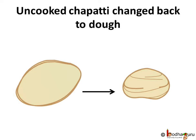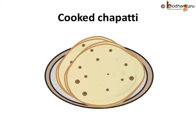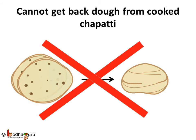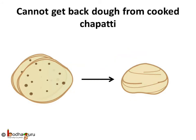If the chapati shape doesn't come out round, your mother may make a small ball out of it and roll it again using the rolling pin, or put it back if no more chapati is required. To make the chapati ready for eating, your mother cooks it on fire using a tawa, that is a griddle. Cooked chapati tastes different from uncooked roti — the smell and even color have changed. We cannot get back the dough from the cooked chapati, as the dough has changed into an entirely new substance due to the use of heat. So, cooking a chapati is a chemical change.